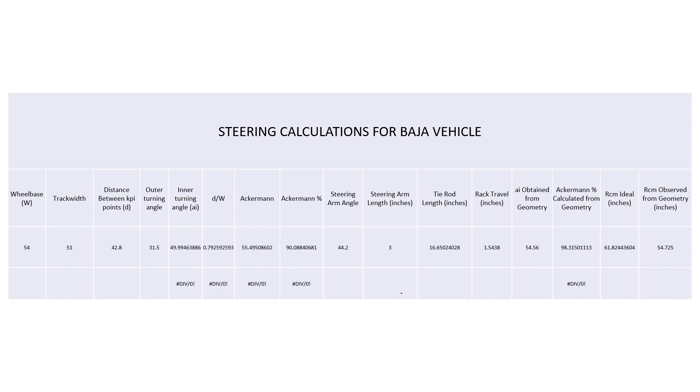Talking about the steering calculations Excel sheet. I have attached this Excel sheet in the description box. You can download it from there and just keep the values for wheelbase, track width, KPI distance, outer turning radius angle. You will be getting the value of this inner turning angle. Calculate this, Ackermann will be calculated, Ackermann percentage will be calculated.